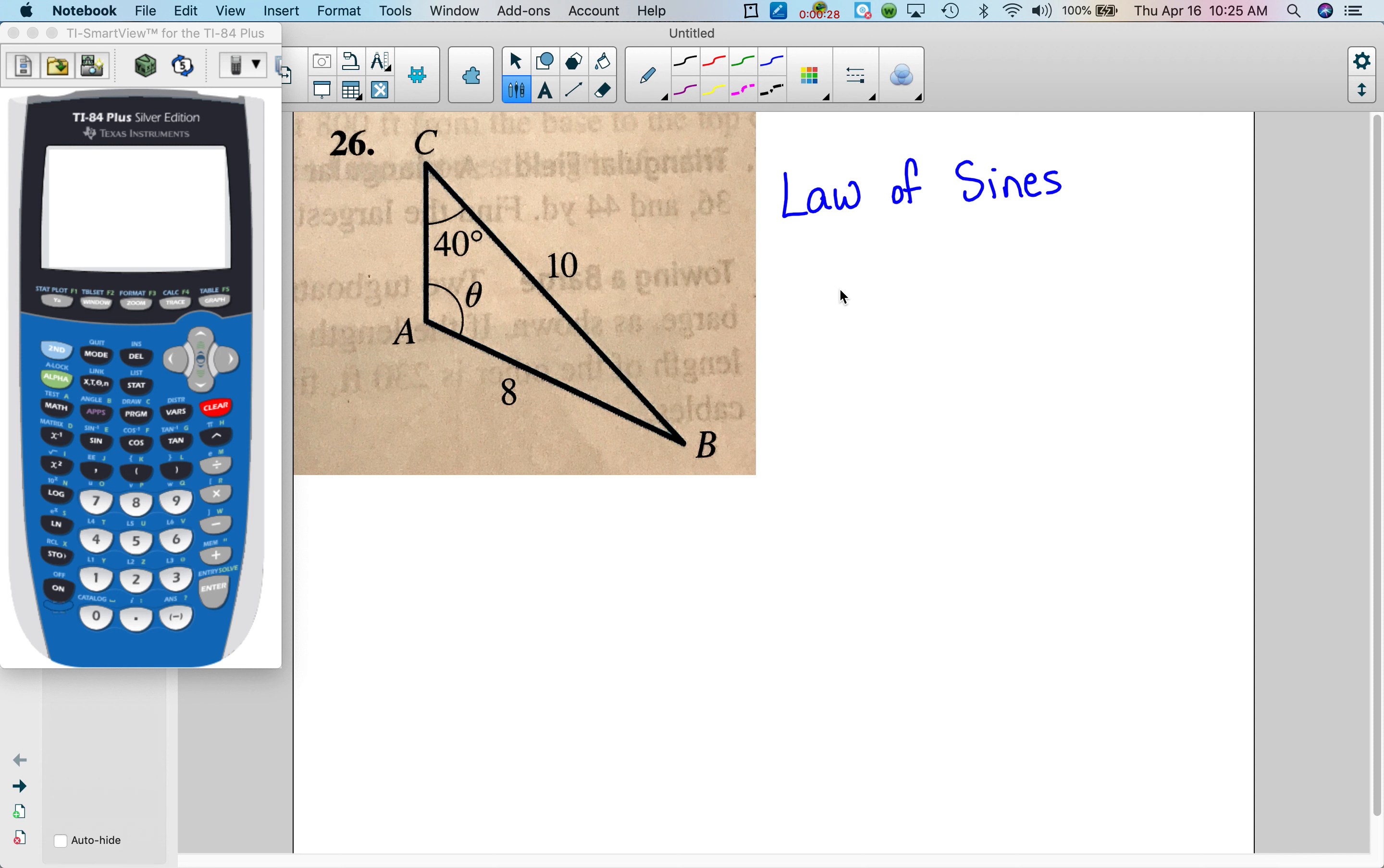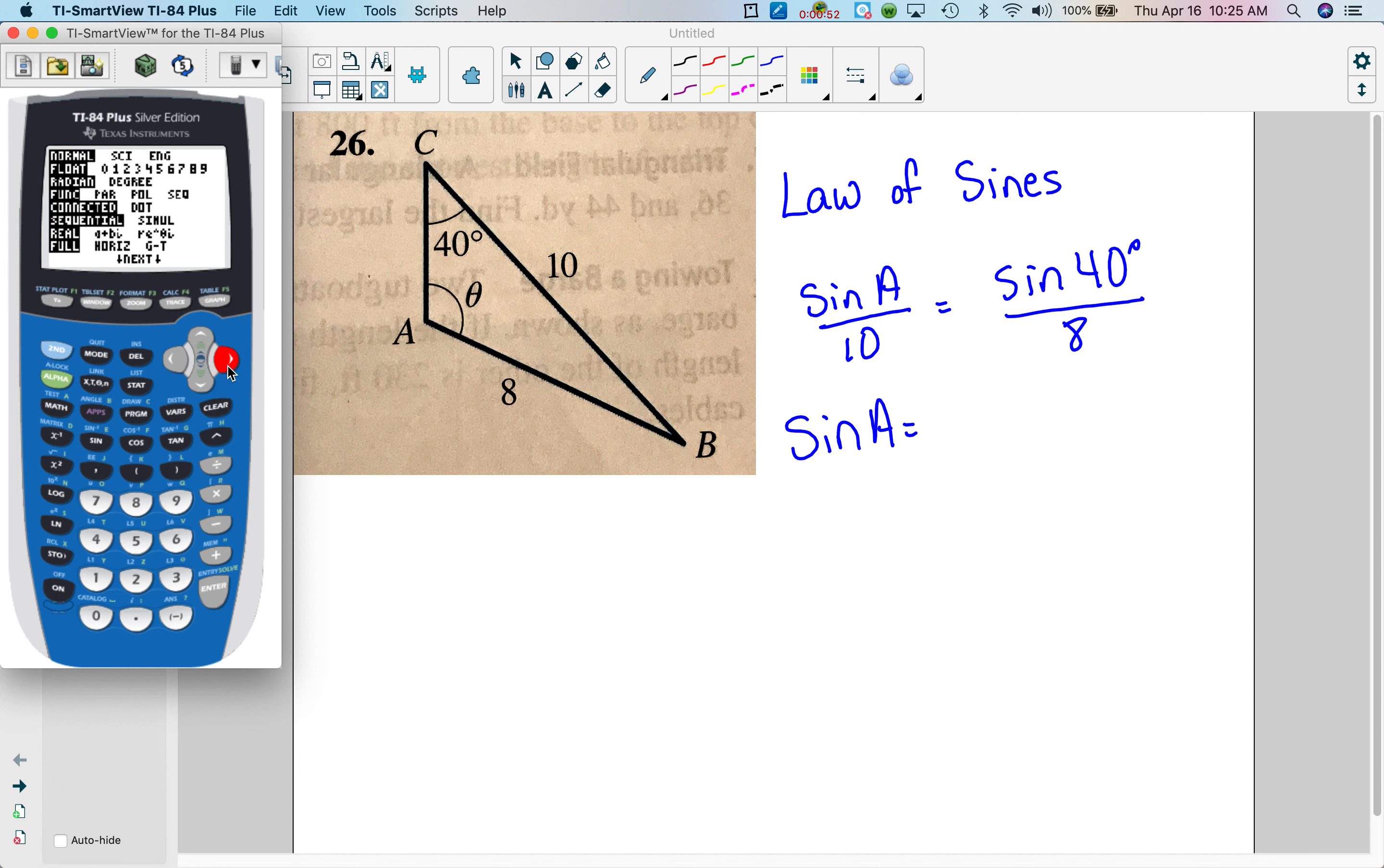So most of you started off beautifully. You have sine A over 10 equals sine 40 over 8, not a problem. So then you did your cross multiply and divide. So we get sine A. We're going to take 10, let me check, make sure that my calculator, nope I'm in radians.